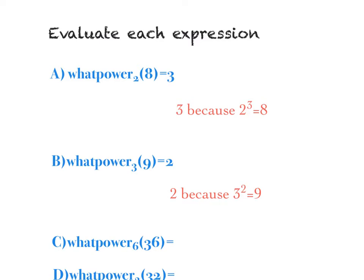So it says, evaluate each expression. The what power of 2 of 8 equals 3, and here's why it equals 3: it's 3 because 2 to the 3rd equals 8. So I want you to think about that — the what power, little base 2, of 8 equals 3, and the reason is 2 to the 3rd equals 8. What I want you to do is take your pen and go around the world like this — make a little spiral. 2 to the 3rd equals 8.